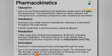Now the pharmacokinetics of desflurane. Pharmacokinetics has four main pillars: absorption, distribution, metabolism, and elimination. First, absorption: due to its low blood solubility of 0.42, desflurane rapidly enters the bloodstream. This characteristic allows faster induction and emergence from anesthesia compared to other inhalation anesthetics.